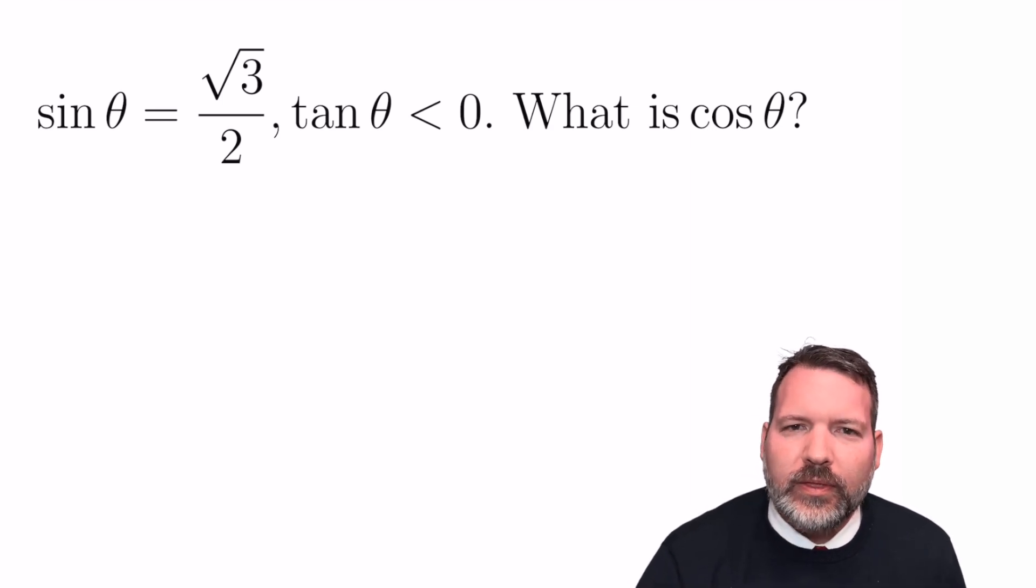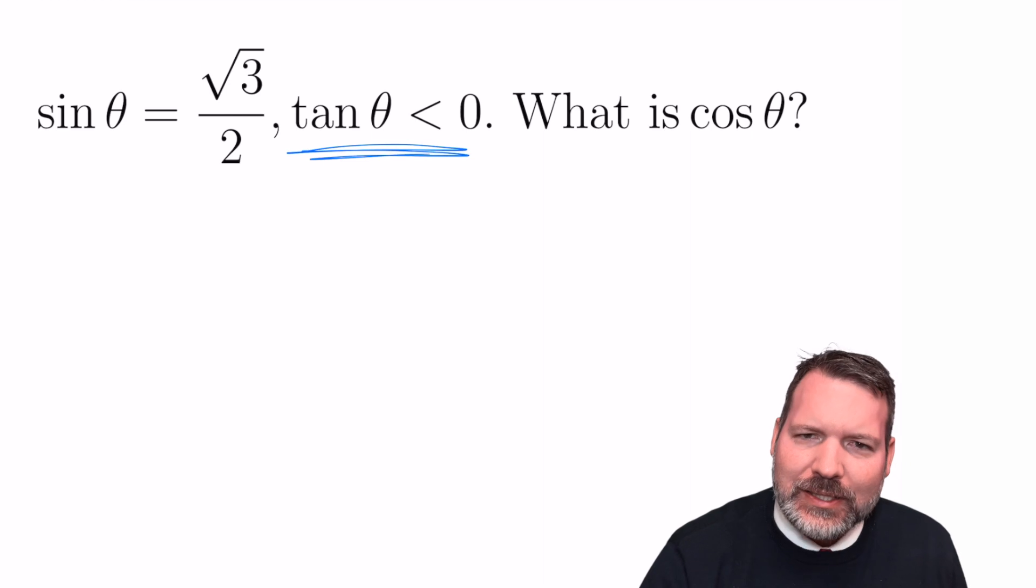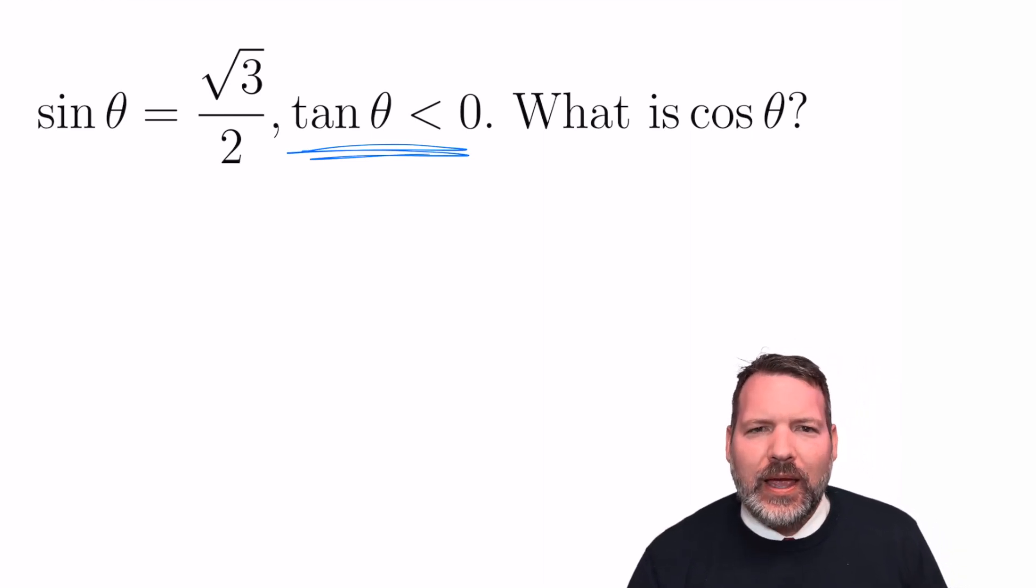And then you get a problem like this. Sine theta equals root 3 over 2. Tangent theta is less than 0. What is cosine theta? Tangent theta is less than 0. If we're just looking at lengths in a right triangle, lengths are not supposed to be negative. How are we supposed to deal with that piece of information?